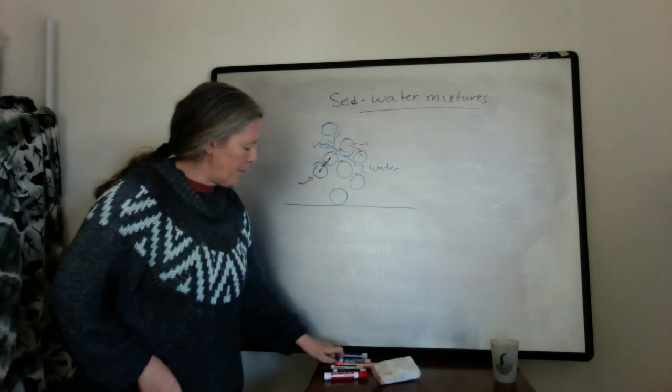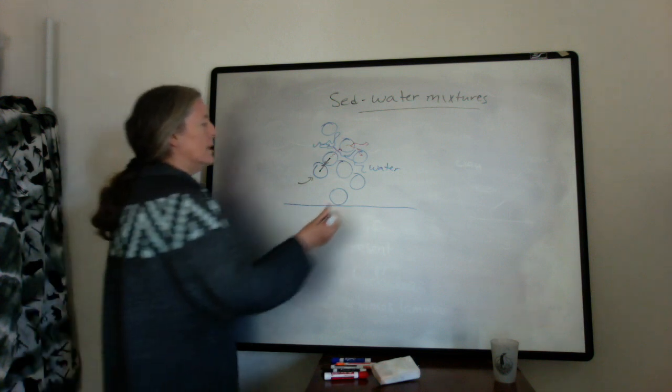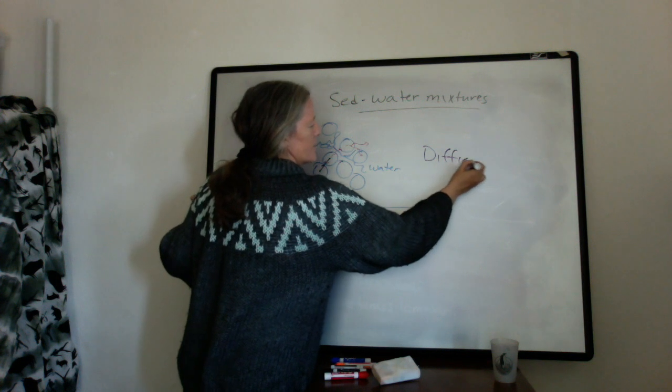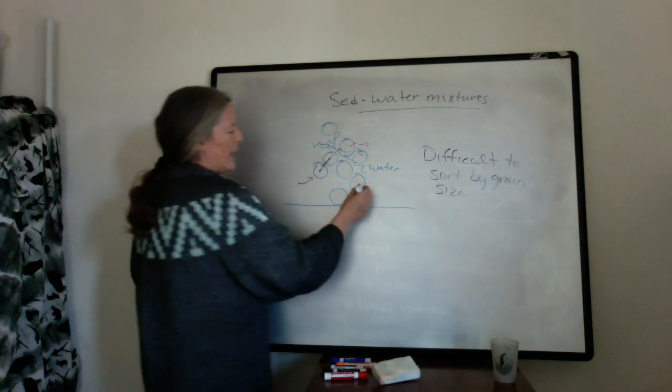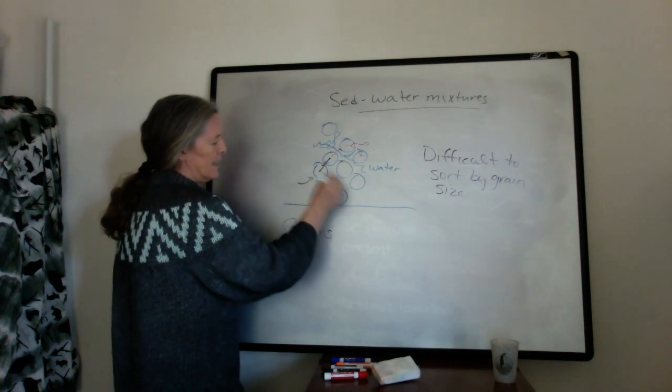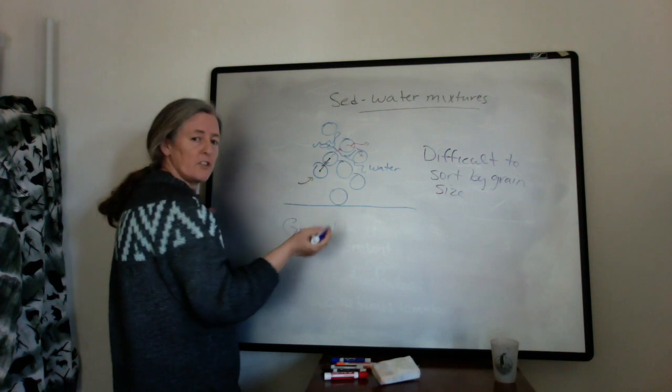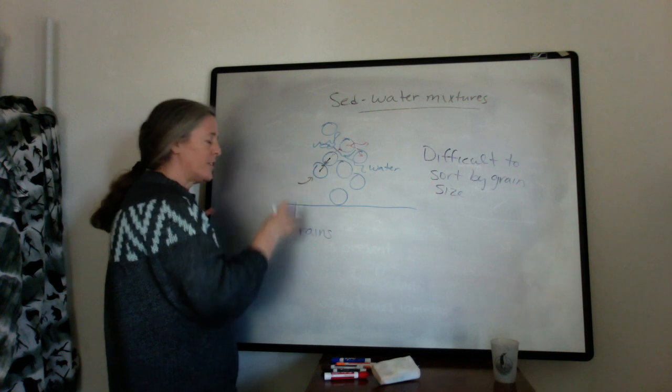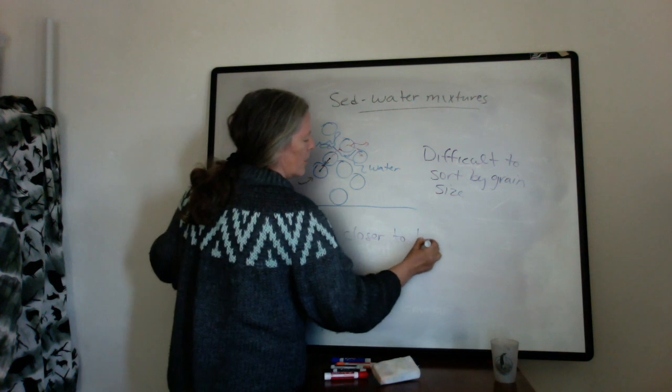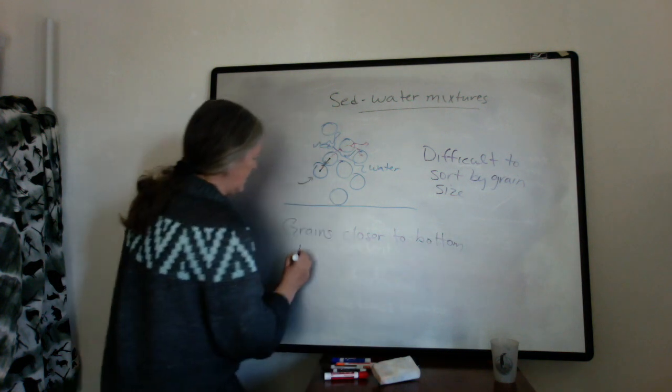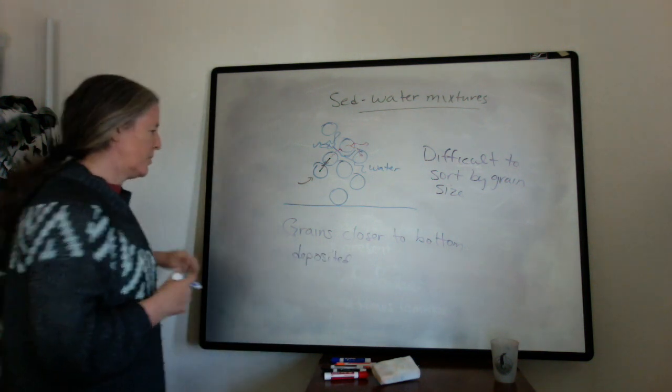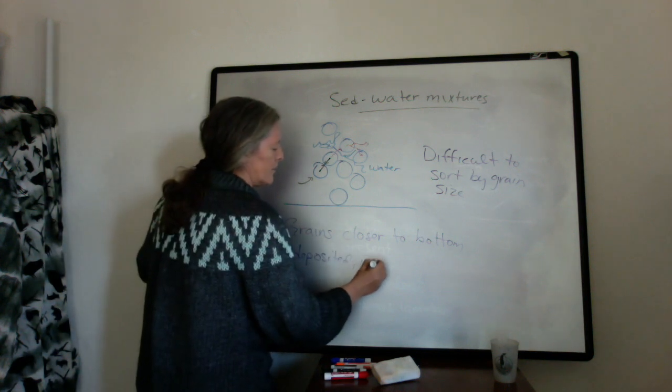And one of the things that happens in this particular case is that it's very difficult to sort out the grain sizes. And so usually what happens is that the grains that get deposited are the ones that interact and hit the bottom of the flow. And it's not so much determined by grain size. It's just their location in the flow. So grains closer to the bottom are deposited from flows like this, particularly as they start to slow down. And that's irrespective of size.